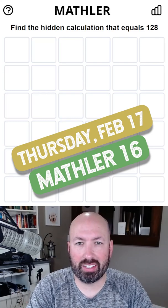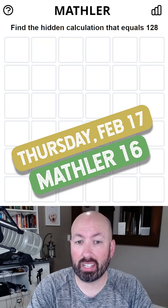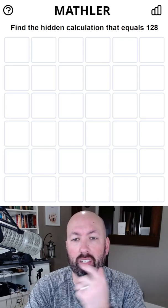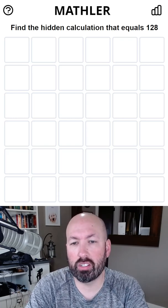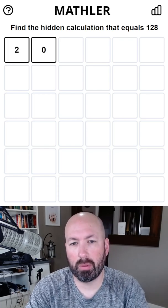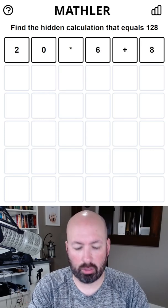All right, this is the Mathler for February 17th. Our total today is 128, which is a lot bigger than the ones we usually get. So I'm going to start with a two digit times a single digit. Maybe 20 times 6 plus 8? That doesn't seem too bad.